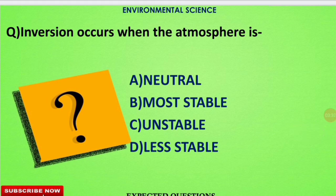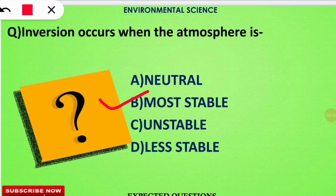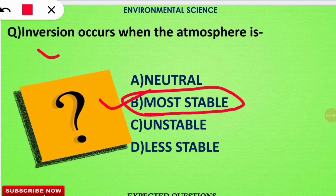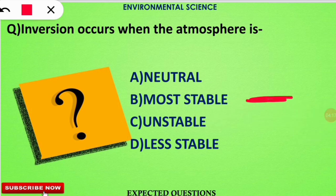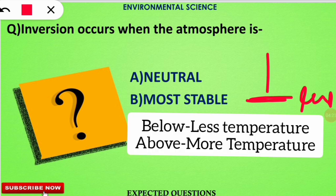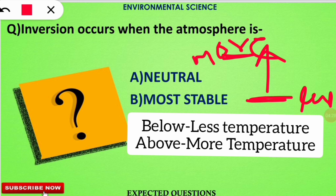The next question is: temperature inversion is a process that occurs when the atmosphere is in what state? The correct answer is option B — it occurs when the atmosphere is more stable. In this case, the lower atmospheric temperature is less and as we move up the temperature is higher. This condition is called inversion and represents the most stable state of the atmosphere.